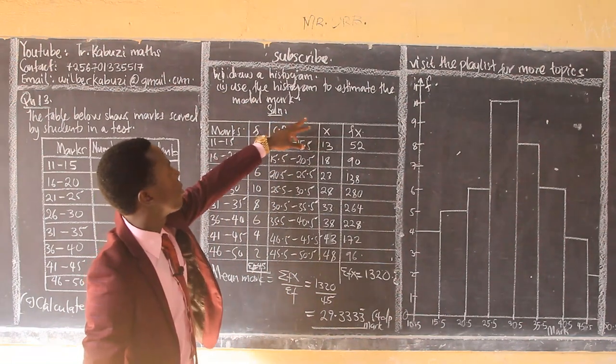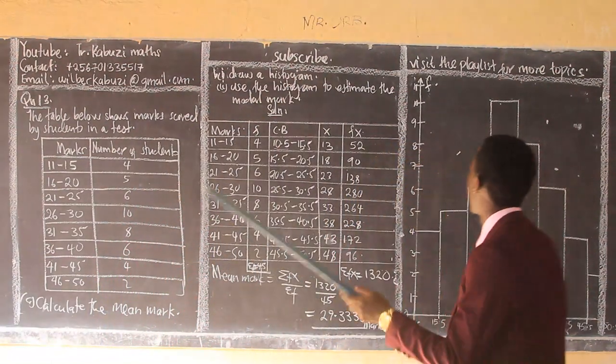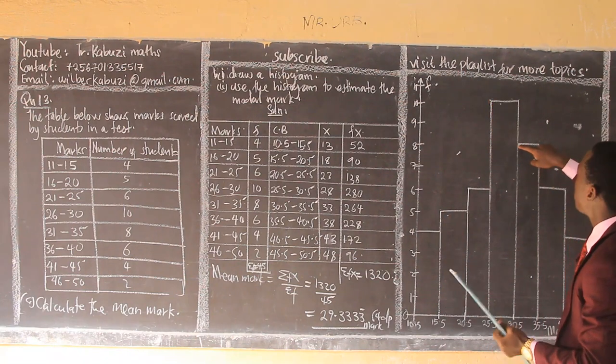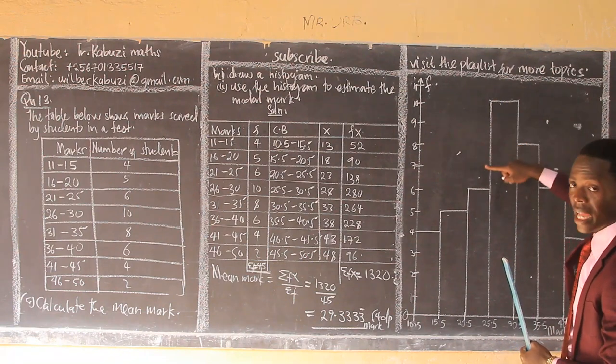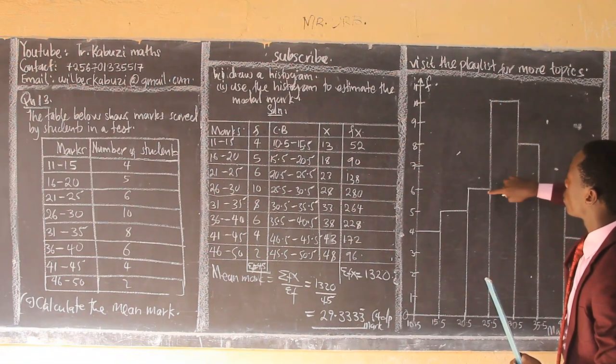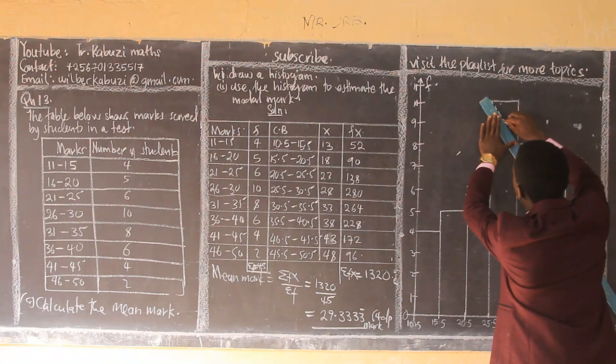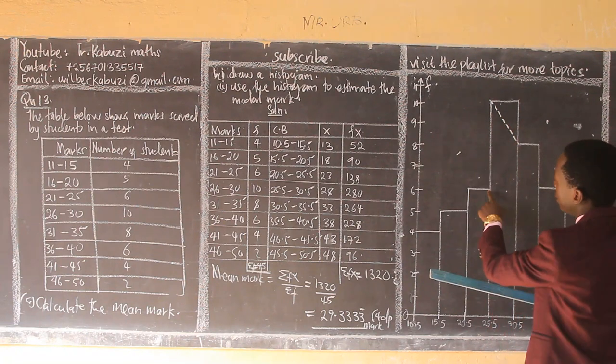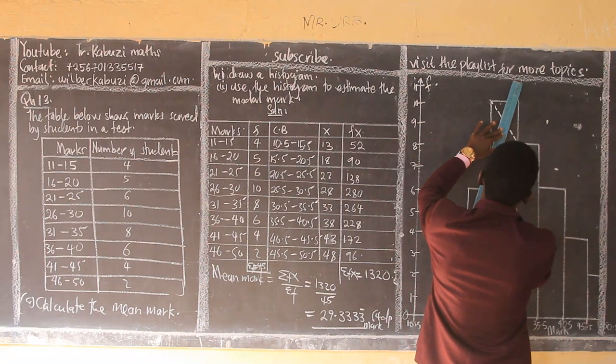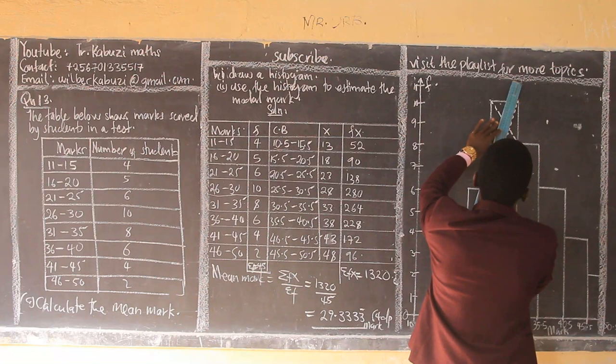Now they are telling us to use the histogram to estimate the modal mark. To estimate the modal mark, what we do, you get your ruler. You join this upper corner to this corner, to the immediate corner, to this class with the highest frequency. This is the class with the highest frequency. So you get this, the corresponding corner. You also get this, the corresponding corner like that. So you get your ruler now, you do that. Then you also get this, you join it to that one there.